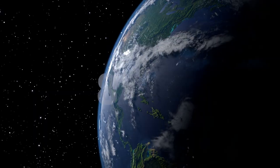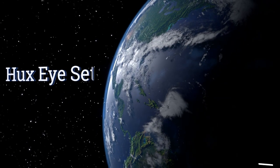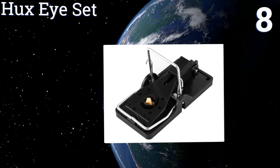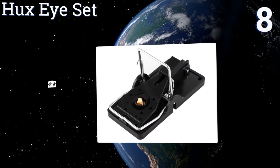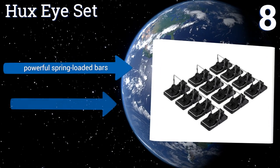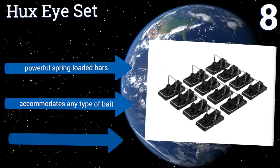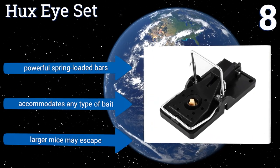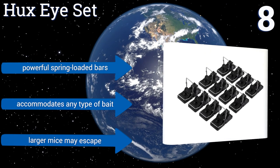At number eight: available in packs of six or twelve, the Hog's Eye Set is sanitary and easy to bait, even for those with no experience trapping critters. Unlike the classic wooden ones, these galvanized steel models are resistant to odors and stains. They come with powerful spring-loaded bars and accommodate any type of bait. However, larger mice may escape.